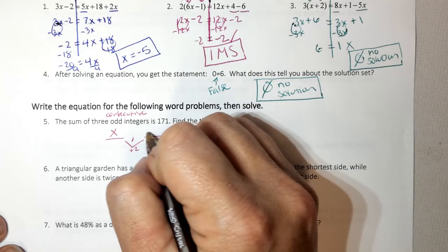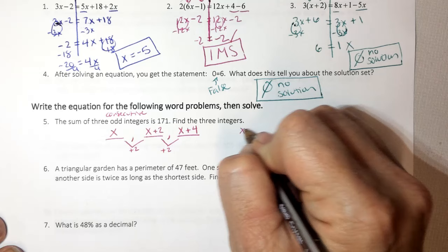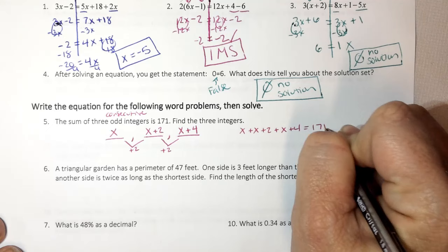So my first unknown is x. And I know to get to my next odd number, I have to add 2, which gives me x plus 2. And to get to my next odd number, I have to do x plus 2 again, which gives me 2 plus 2, which is 4. And it says the sum of that is 171. So x plus x plus 2 plus x plus 4 equals 171.